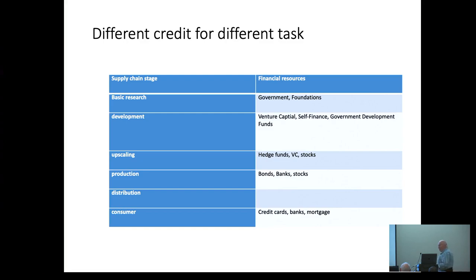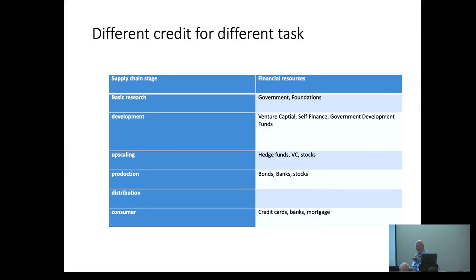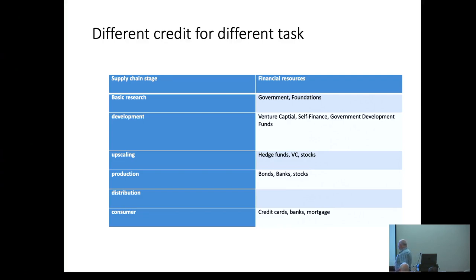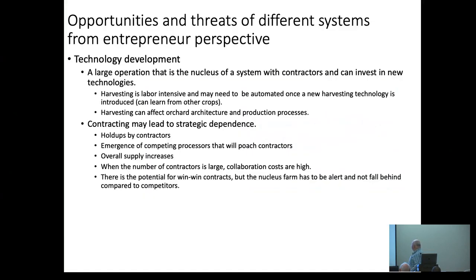The reason California is so successful is partly because of organizations that started in the movie industry and give you money based on trust — and we have venture capital. A movie producer is essentially venture capital that does sexy things. For upscaling you have hedge funds and stocks, and later bonds. And if you're a consumer, you have credit cards. These are things you need to understand to understand how supply chains operate.